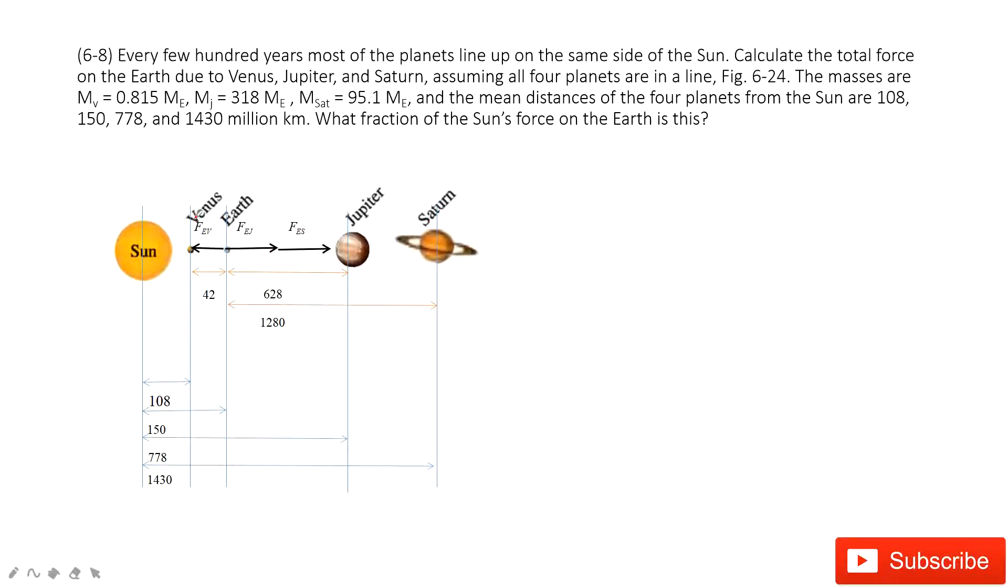The Venus, the force acting on Earth pointing to the Venus. See, we have this vector, this vector, and this vector. So we add these three vectors together to get the total force acting on the Earth by these three planets.